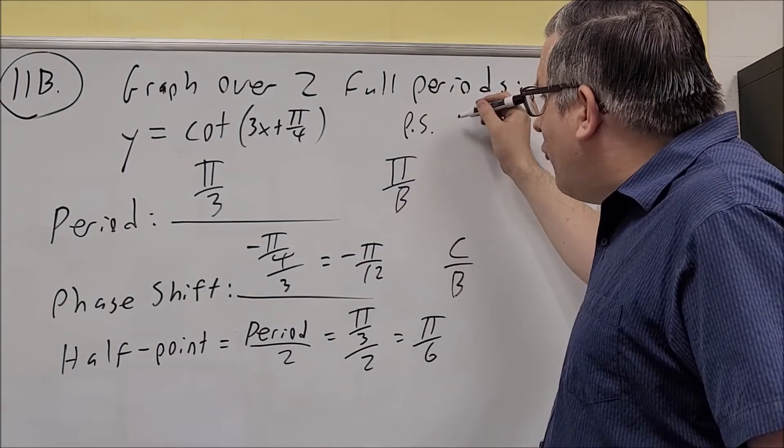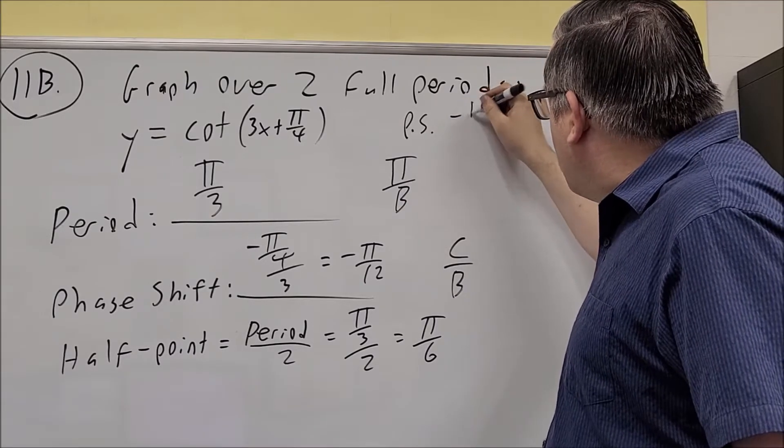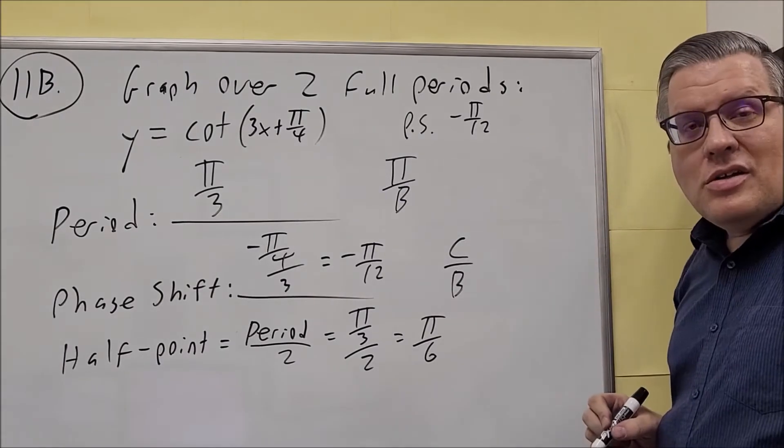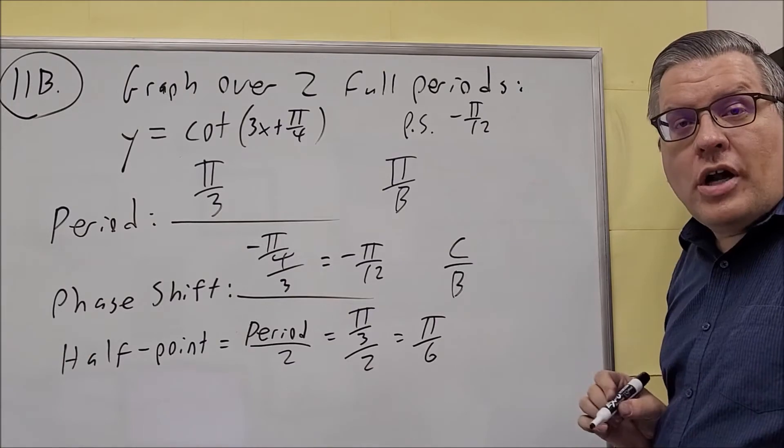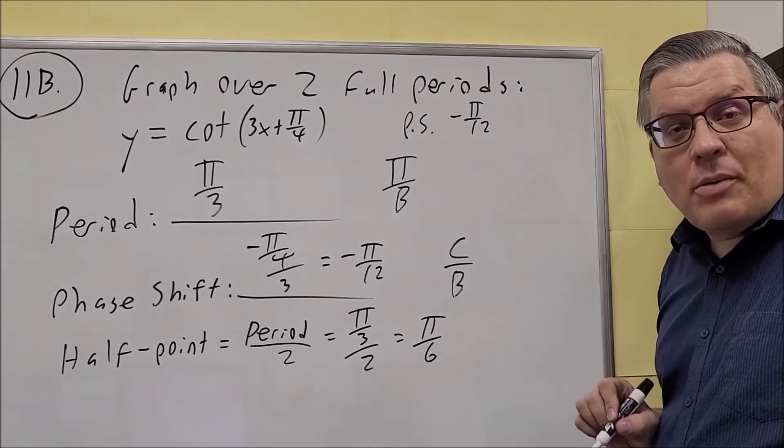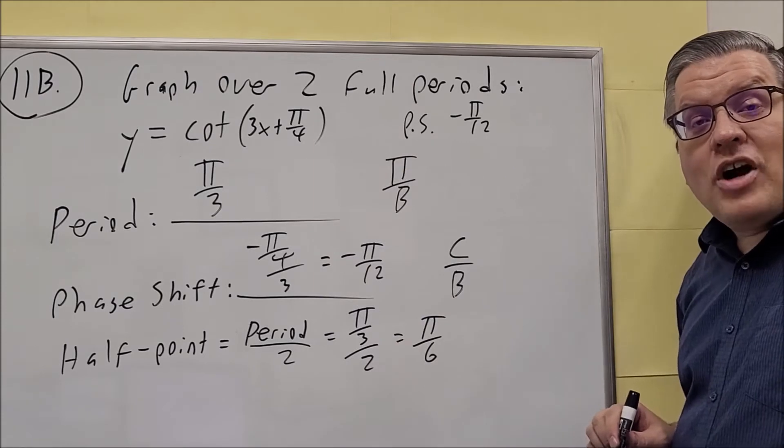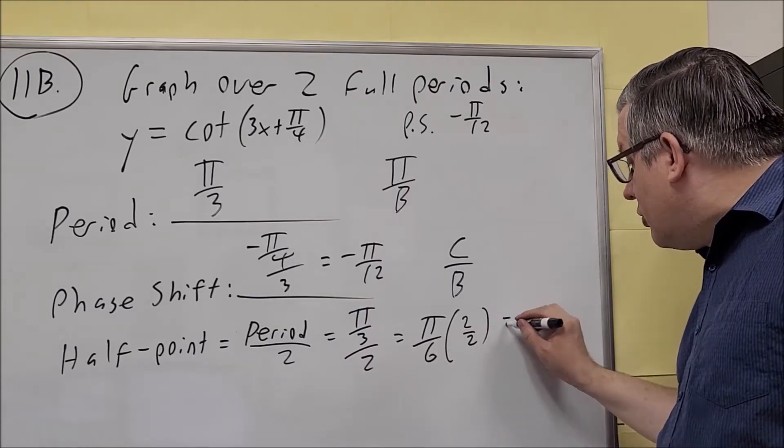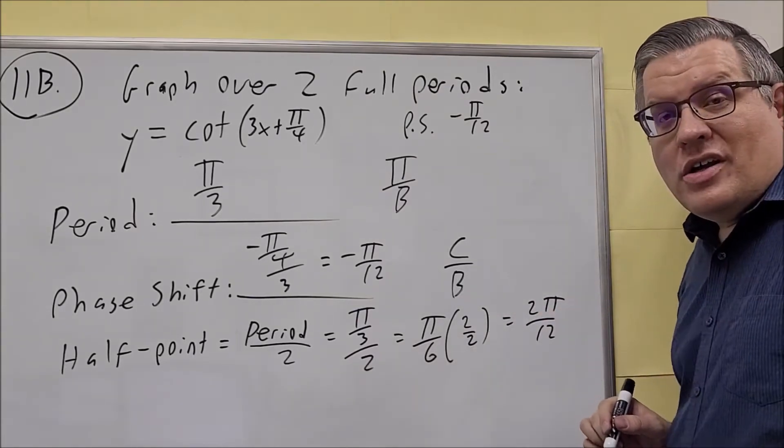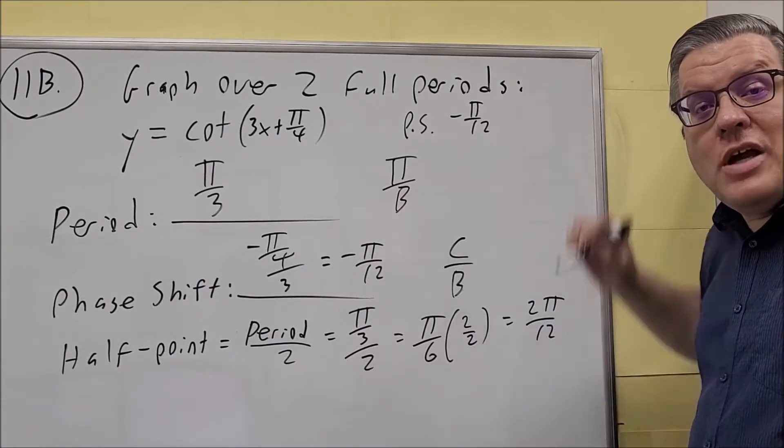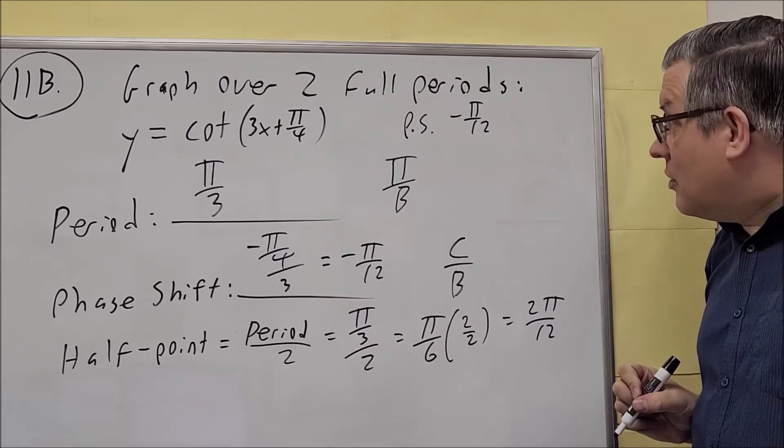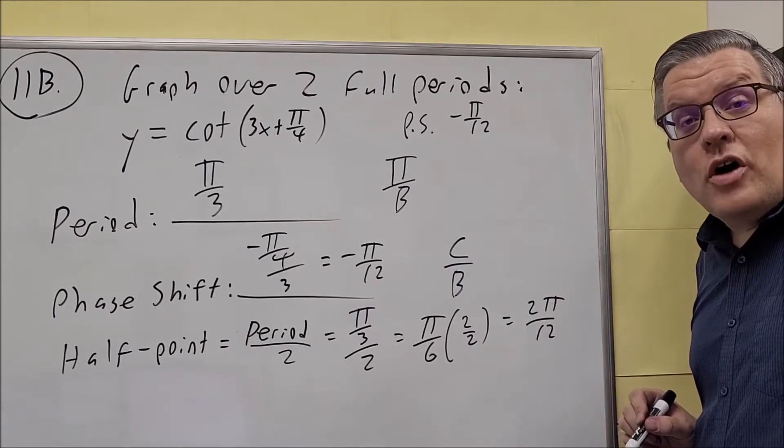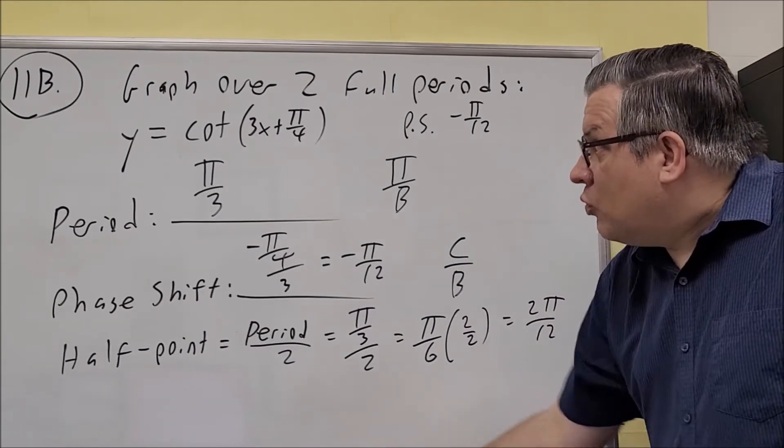So our phase shift was negative π over 12. And then we have half point. Now, these two should have the same denominator. So if your phase shift and half point do not have the same denominator, it's always best to get common denominators first to make it easier later when we add to find the other key points. So I'm going to multiply it by 2 over 2, and get 2π over 12. And so now this one is going to match the denominator of the phase shift, and it's going to make everything easier to add. So we'll start with the phase shift, that's your first key point, and we're just going to keep adding 2π over 12 to it until we get all of them complete.